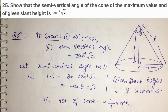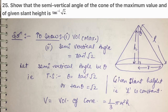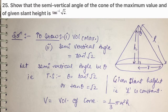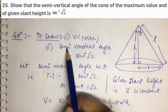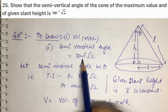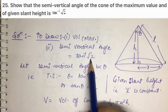What does this question mean? You want to show that the semi-vertical angle of the cone of maximum volume, when slant height is given, is tan⁻¹(√2). This means semi-vertical angle θ = tan⁻¹(√2), which is equivalent to showing tan θ = √2.